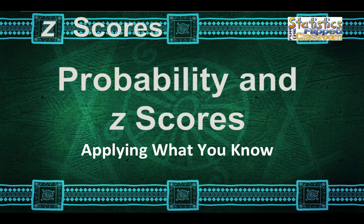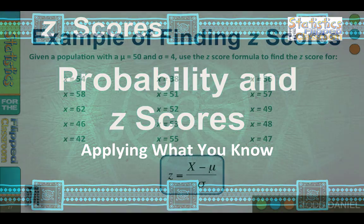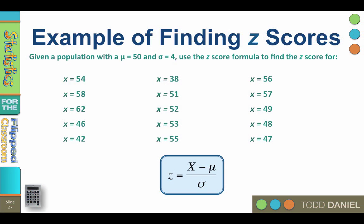Let's begin by computing some z-scores. To apply our z-score formula we need a mean and a standard deviation for the population. For this example we have been given a population with a mean of 50 and a standard deviation of 4. We're going to use the z-score formula to find the following z-scores.